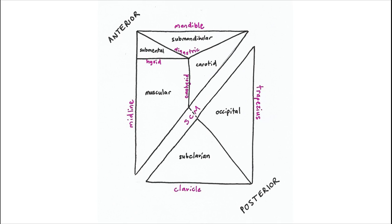To review, this is a helpful diagram that I came up with, just kind of simplifying all the triangles, bringing it into one big rectangular drawing. The main boundaries are the sternocleidomastoid, which cuts through diagonally.